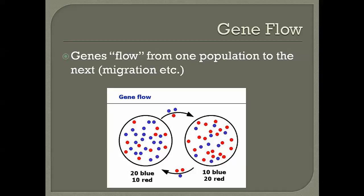Gene flow occurs when genes migrate into or out of a population due to migration or immigration. Organisms move from one place to another, bringing new alleles to a population. In an example where an original population has 20 blue to 10 red individuals, and another has 10 blue to 20 red, organisms moving between them will change the allele proportions of each population.